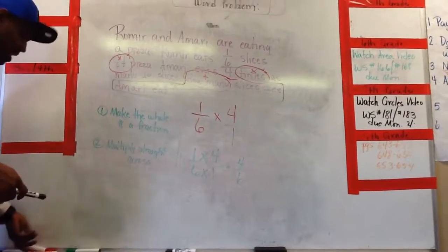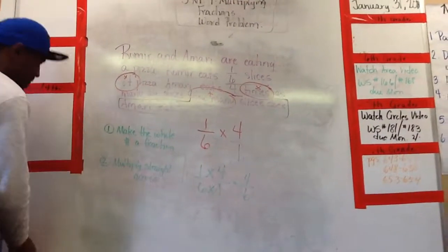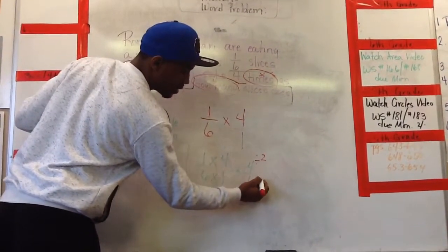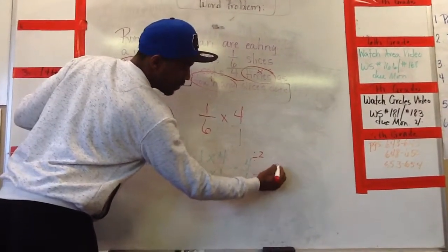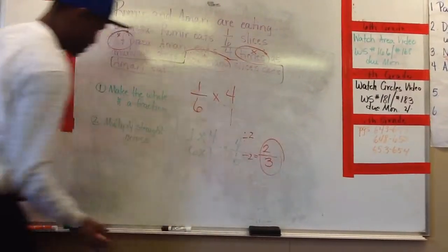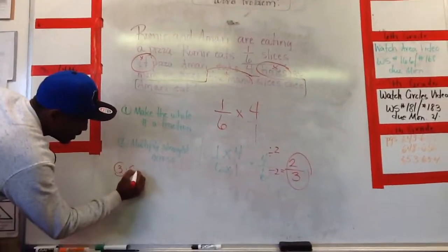Can that simplify? No. Yes. They're both even. What number can divide into any even number? Two. Two. Two. This becomes what? Two. Over. Three. Sixth divided by two. That's three. And of course step three would be to simplify.